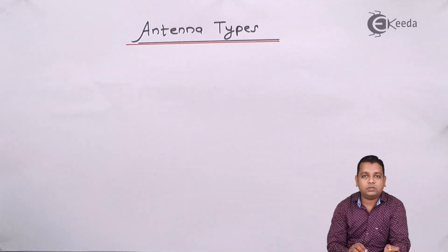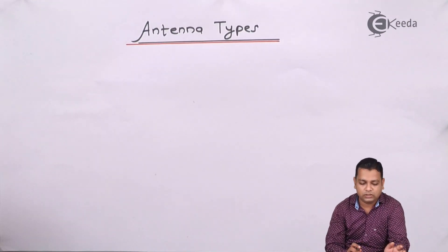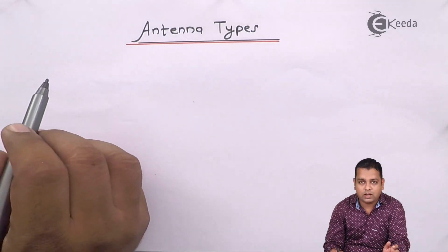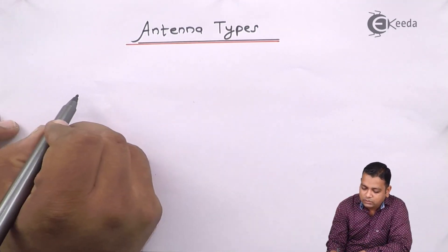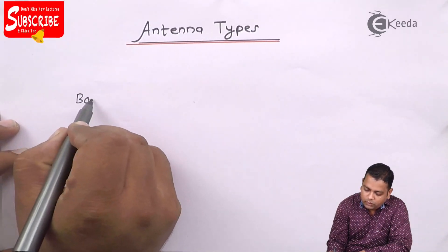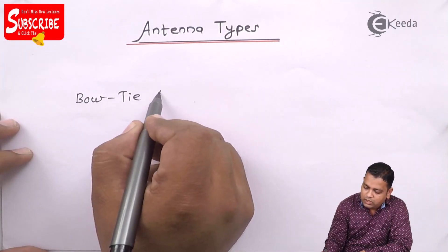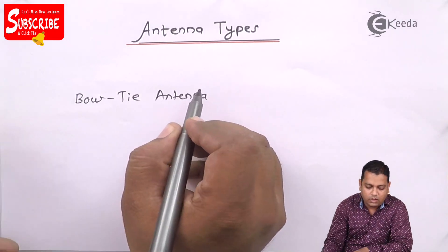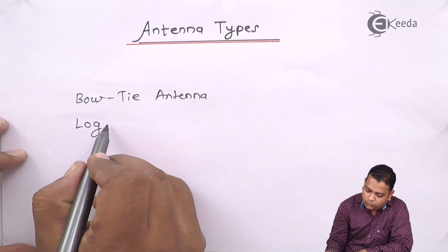The basic types of antennas can be given a simple classification. We shall go first for the log periodic antennas. The log periodic antennas have two types: the bow tie antenna and the log periodic dipole antenna.